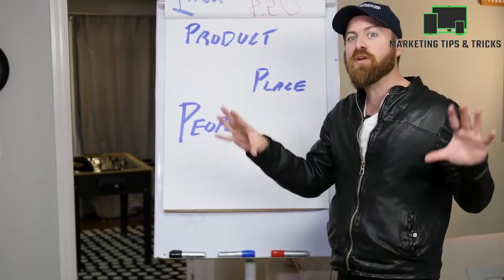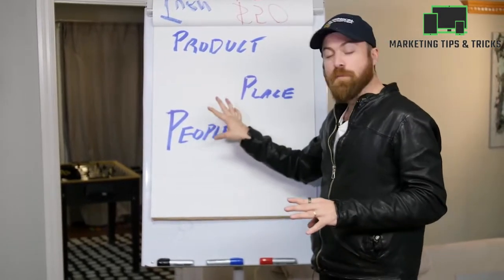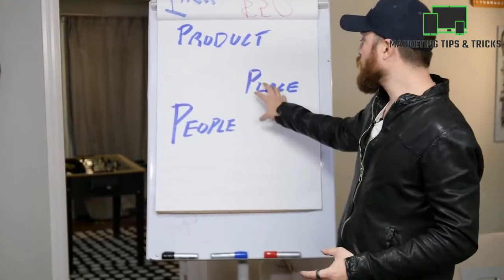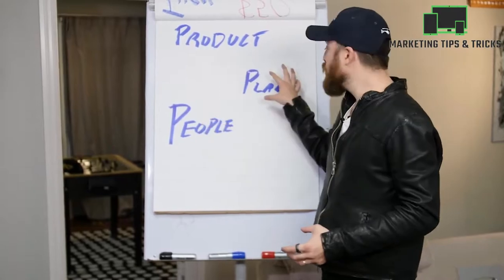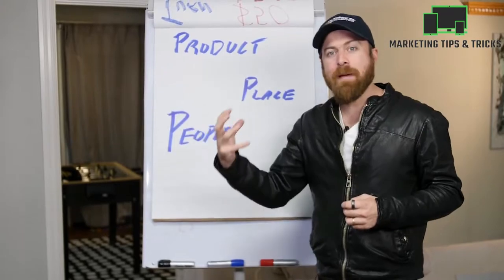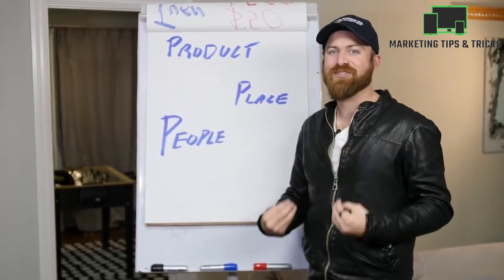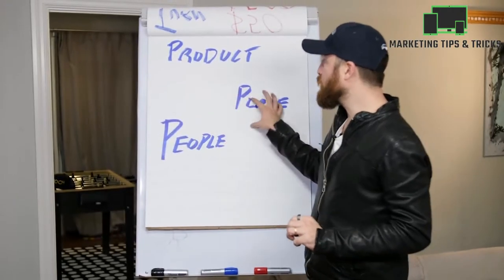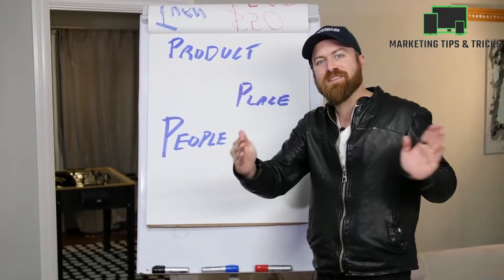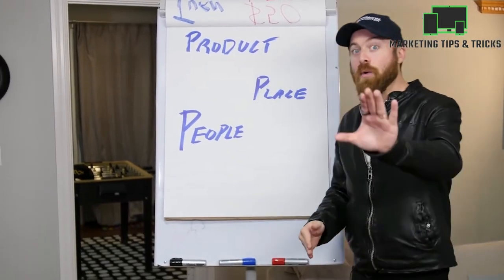I'll be showing you the three-step process: People, Place, Product. You need to reach people — we're going to use Google Ads. We're going to take them to a place, which is a website. Then we need a product for them to buy that will pay us commissions — an affiliate offer. We're going over this entire three-step system in this video.